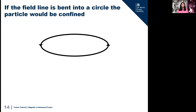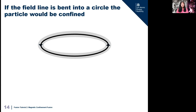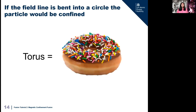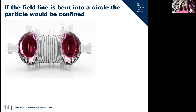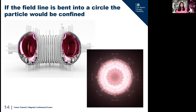So here we have our looped magnetic field line — it's like joining the two ends of the field line together. The grey area showing where charged particles are trapped then looks like a donut shape, and in mathematics a donut is called a torus. This is actually the shape of the fusion machine we have here at Culham. You can see this in an image of JET cut in half, and from above it looks more like a donut with a ring of plasma and a hole in the center.